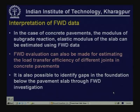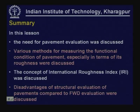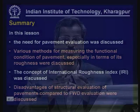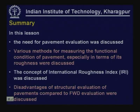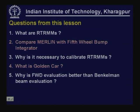To summarize, in this lesson we discussed the need for pavement evaluation, various methods for measuring the functional condition of pavements especially in terms of different roughness indices, the concept of International Roughness Index, and different types of structural evaluation of pavements including comparison of Benkelman beam with FWD evaluation. Review questions: What are RT or MMS? Compare Merlin with fifth wheel bump integrator. Why is it necessary to calibrate RT or MMS? What is a golden car? Why is FWD evaluation better than Benkelman beam evaluation?